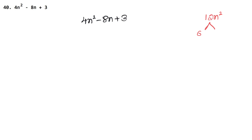6 times 2 are 12, so our two factors are 6n and 2n. Since the middle term sign is plus, both signs will follow accordingly. When we multiply them we get plus, and when we add them minus 8n will come.